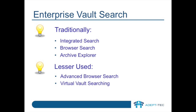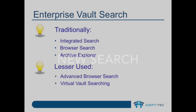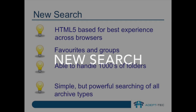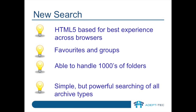But that's all changing. The new Enterprise Vault search aims to address many of the old criticisms and provide an all-new cross-platform search capability. One of the really good new features of the new search interface is that it can handle all the different Enterprise Vault archive types, and it can handle archives with thousands and thousands of folders. Both of these were problems with previous search mechanisms.